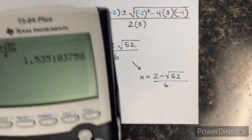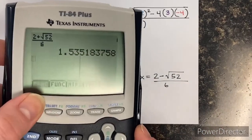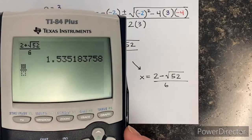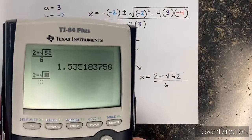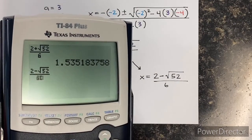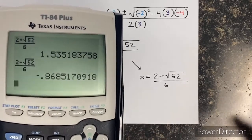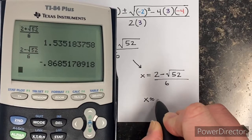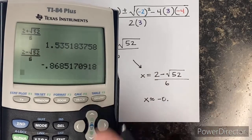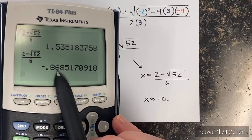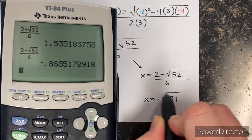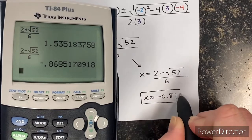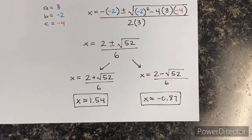Then I just do the same thing to the other one. Alpha, y equals, click enter, type two minus the square root of 52 over six. That gives me another decimal — remember, that is okay. This time my decimal has a six, and looking behind it, that six is going to become a seven. And there we go — that's how you use the quadratic formula.